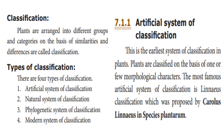What is classification? Plants are arranged into different groups and categories on the basis of similarities and differences — this is called classification. There are four types of classification: artificial, natural, phylogenetic, and modern system of classification.